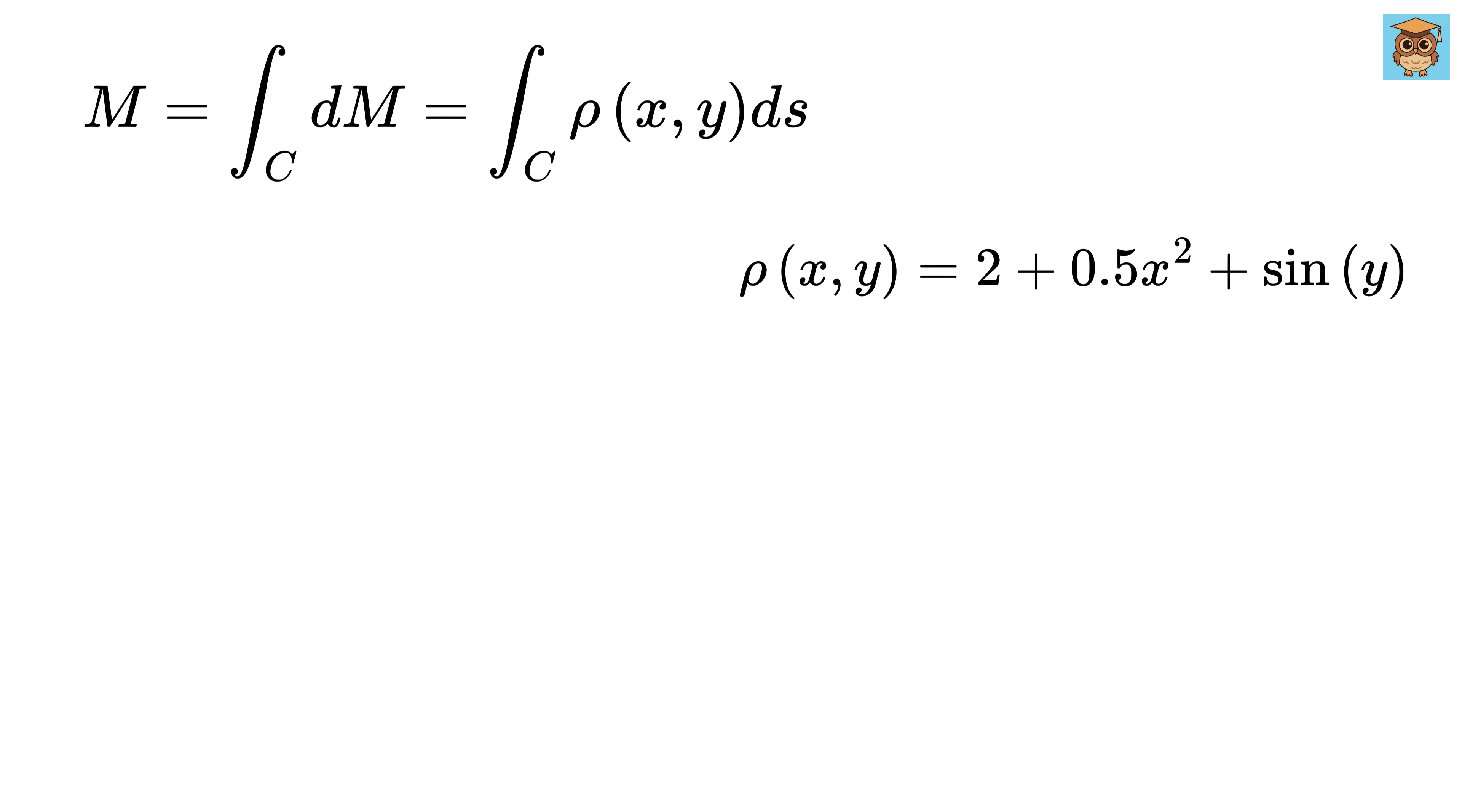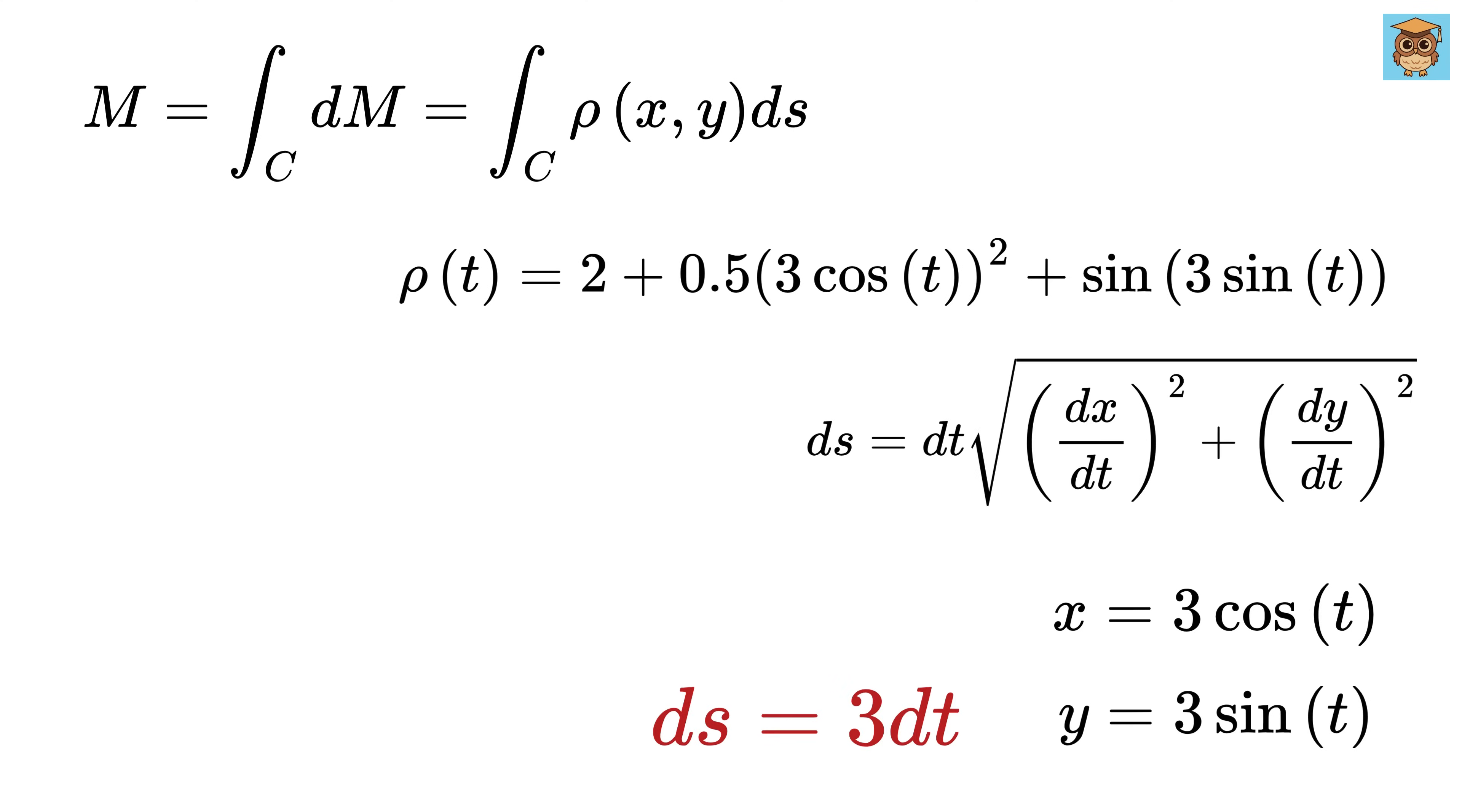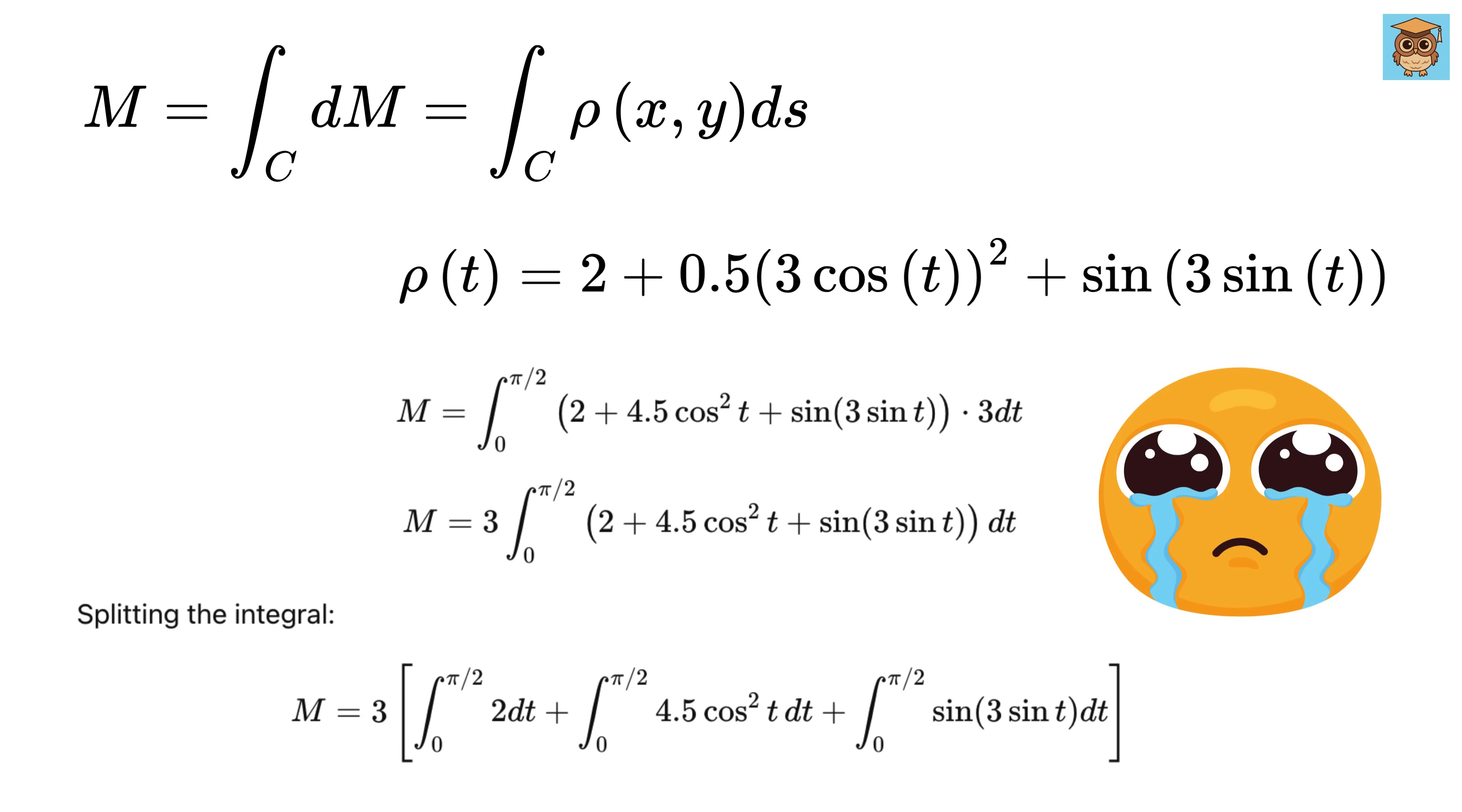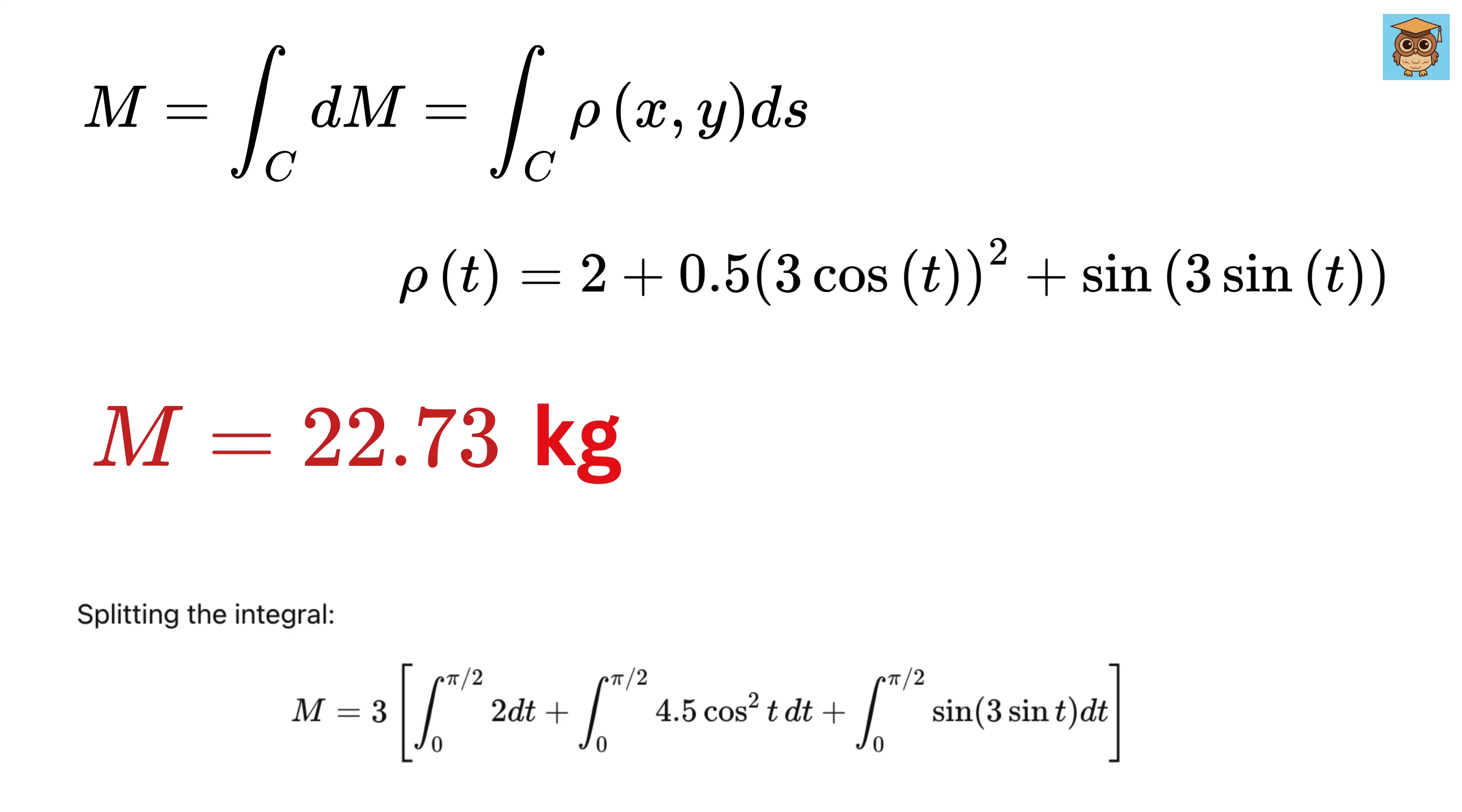Now, if we want to calculate this mass, first we will parametrize the curve like this, then also find the density as function of t, which will be this, then the ds will be same as before, or equal to 3 dt, and thus the mass of the wire placed along quarter circle in this nonlinear density is this line integral, which becomes like this in the end. Now, please don't ask me to solve this integral. We can compute it numerically to get the mass as 22.73 kilograms.